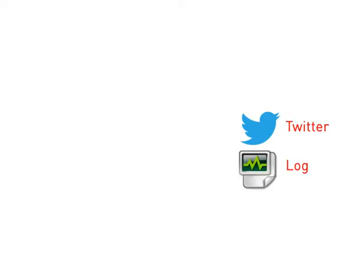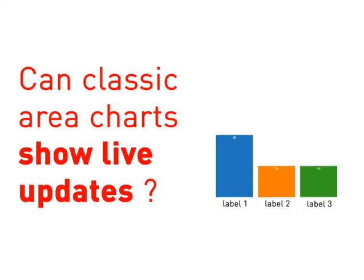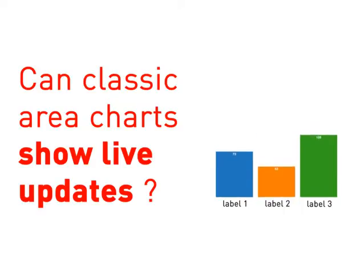Data streams are everywhere — for instance logs, tweets, and RSS feeds. But can classic area charts show live updates? Not really.